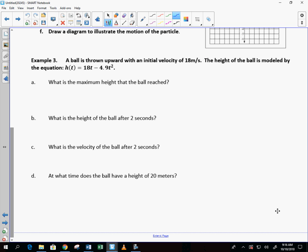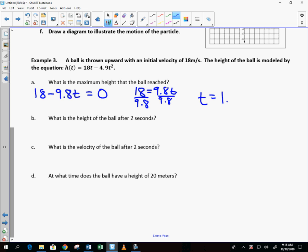Or take the derivative, which is 18 - 9.8t, and set that equal to zero. How do I solve that? 18 = 9.8t, divide by 9.8. Somebody with your handy-dandy calculator.